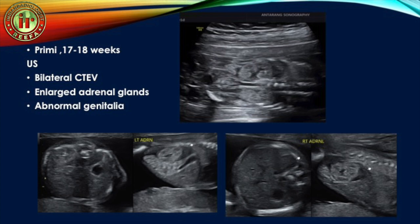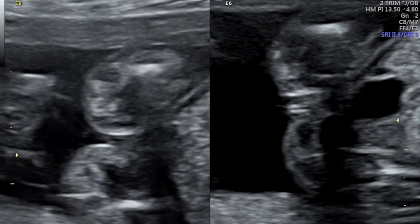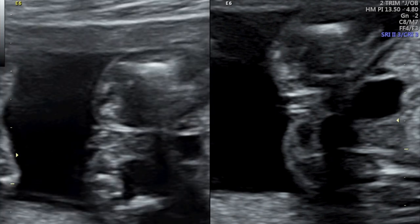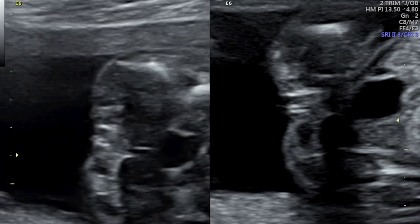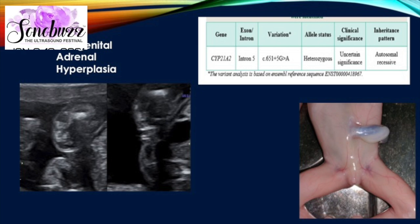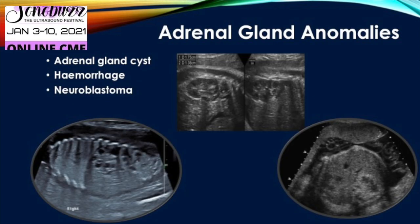Here is a case presenting between 17–18 weeks. Ultrasound findings showed bilateral enlarged adrenal glands and abnormal genitalia. You can see hypoechoic triangular areas just above the kidneys, with length nearly half that of the kidneys. The still images show enlarged left and right adrenal glands. On the perineal clip, you can see the labia with a protrusion in between. A diagnosis of congenital adrenal hyperplasia was suspected. The pregnancy was terminated, and the abortus confirmed abnormal genitalia. The mother's genetic report later showed a CYP21B2 gene mutation associated with CAH, though of uncertain clinical significance.